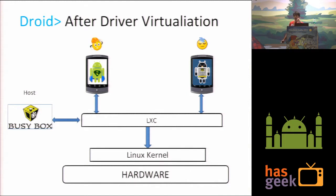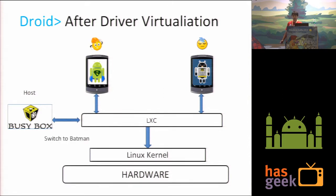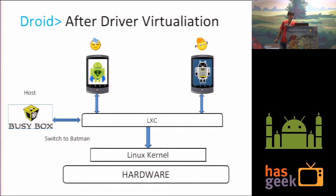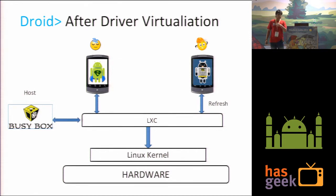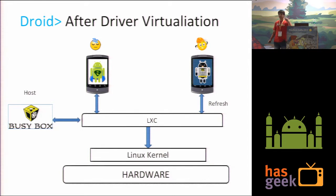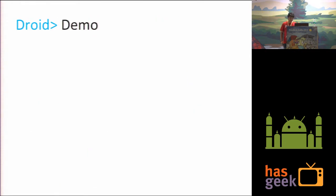I introduced the concept of foreground OS and background OS. Superman is foreground and Batman is background. When Superman runs a refresh or does anything on the screen, only Superman's screen is refreshed and Batman does nothing — Batman only runs its own processes in the background. The BusyBox host can run a switch-to-Batman command, making Superman go to background and Batman to foreground. If Batman runs a refresh, only Batman's screen is refreshed. The background OS retains its own frame of memory allocated to it, but it does not get displayed.